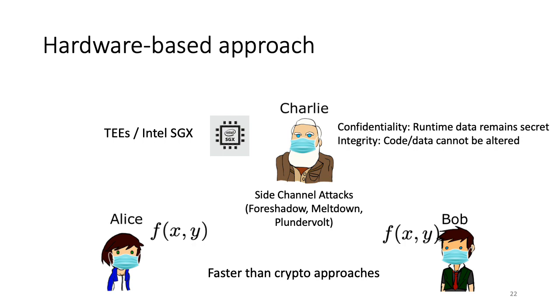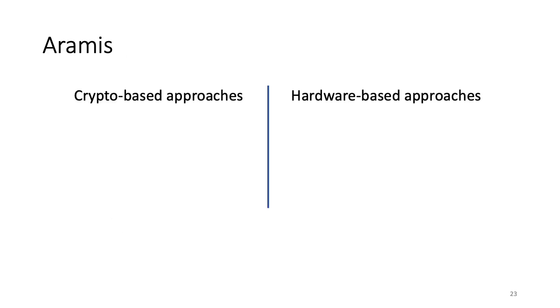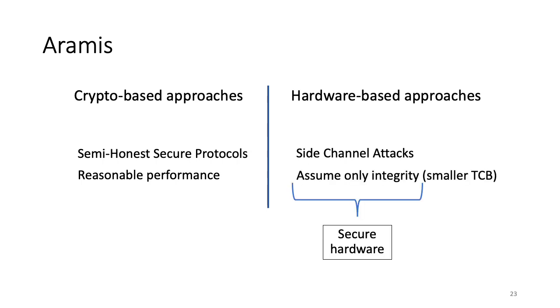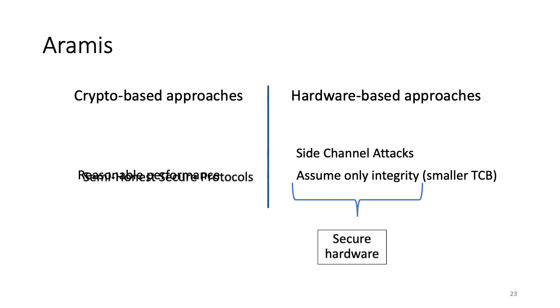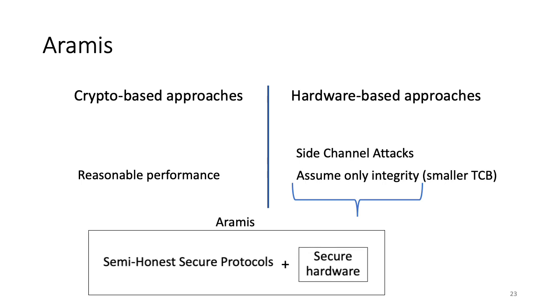While such hardware-based approaches are faster than the crypto ones, they suffer from side-channel attacks like Foreshadow, Meltdown, Plundervolt, etc. which can often compromise their guarantees. This is exactly where Aramis comes in and combines the two approaches. Like we just saw, crypto-based approaches have reasonable performance for semi-honest secure protocols but not for malicious security. And hardware-based approaches are generally faster but suffer from side-channel attacks. To get the best of both worlds, we assume a minimally secure hardware that only provides integrity guarantees and combine this with semi-honest secure protocols from crypto-based approaches to get Aramis.